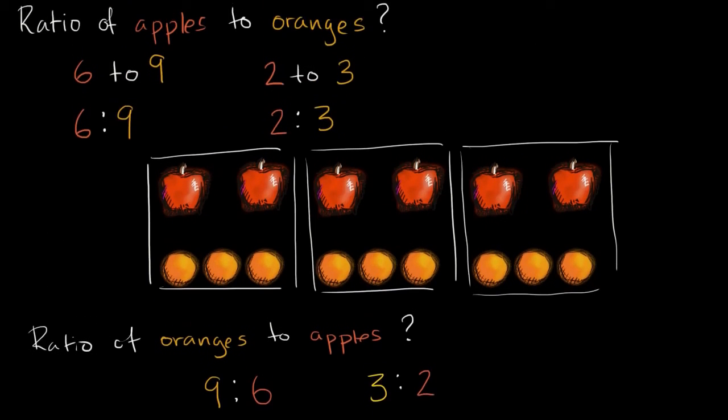So notice, this is just exactly what we had up here. But when we had apples to oranges it was six to nine, six apples for every nine oranges. And now when it's oranges to apples we say it's nine to six, nine oranges for every six apples. Or we could say for every three oranges we have exactly two apples.